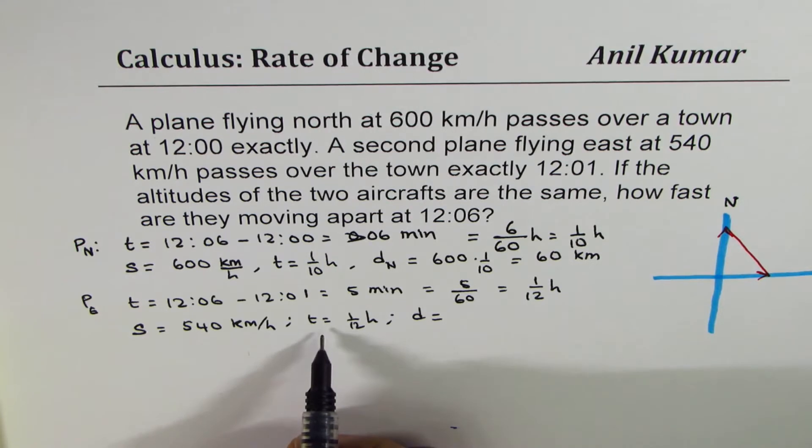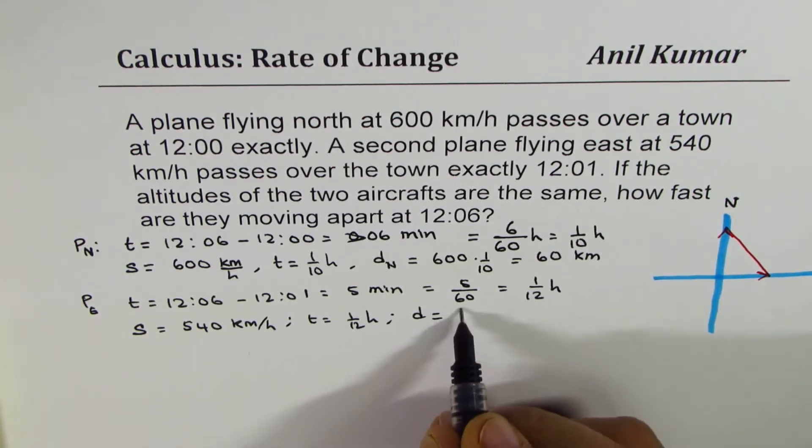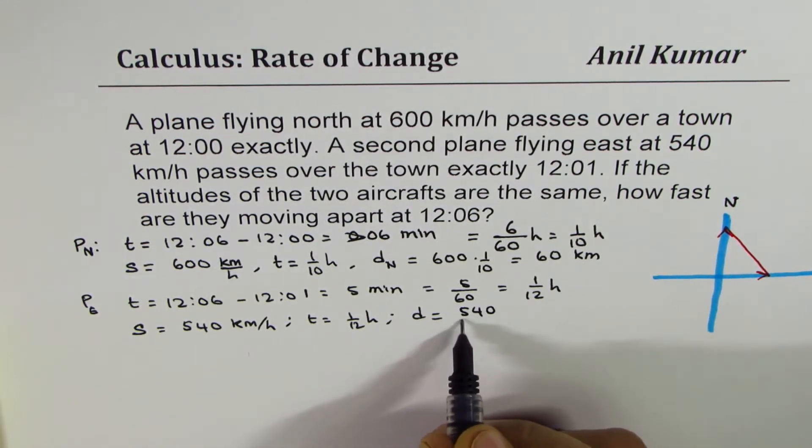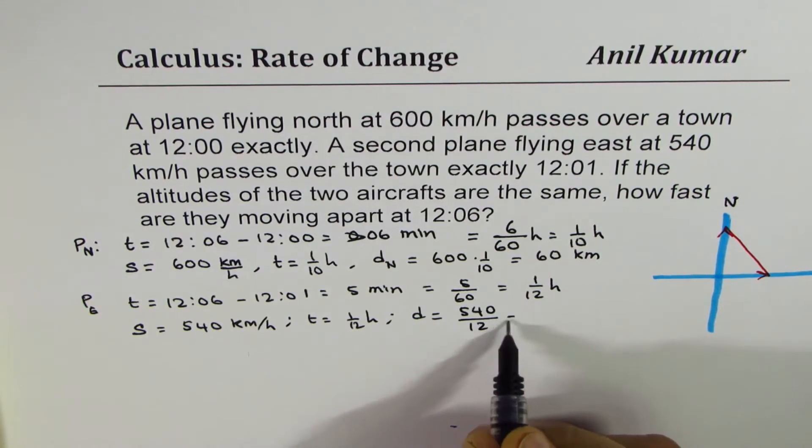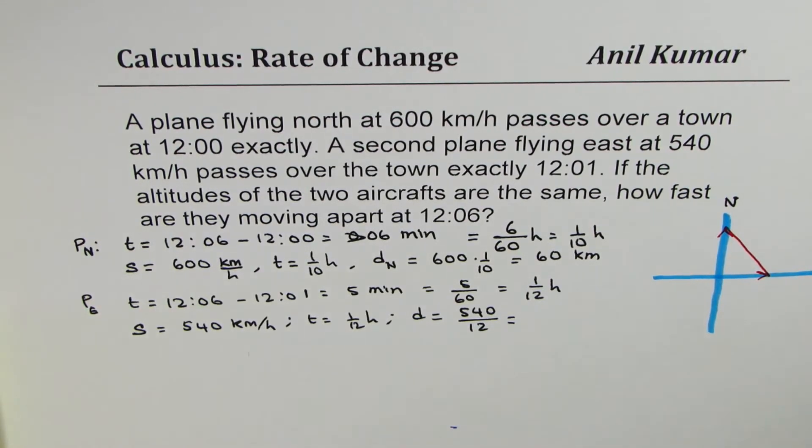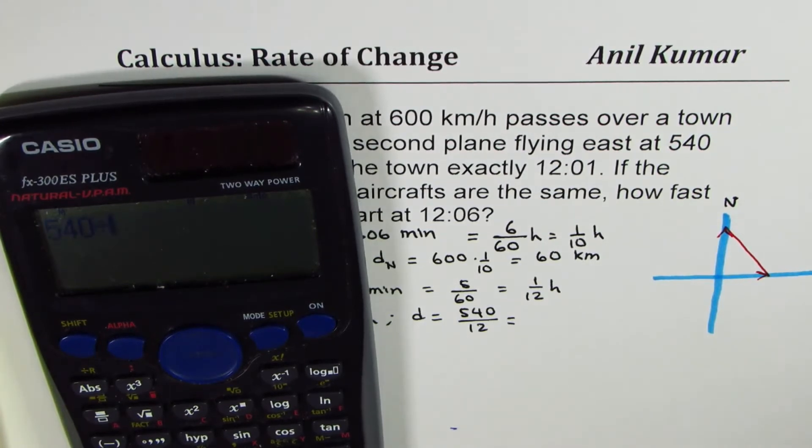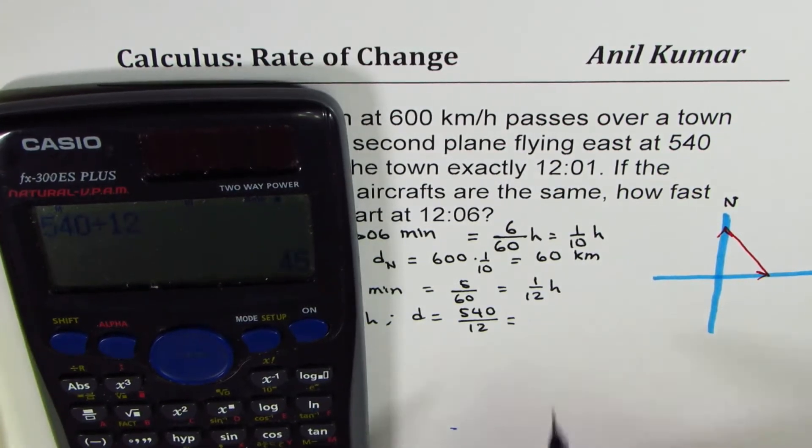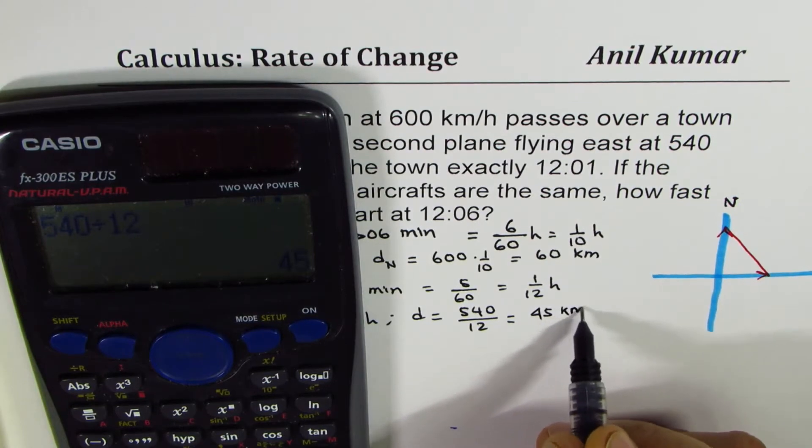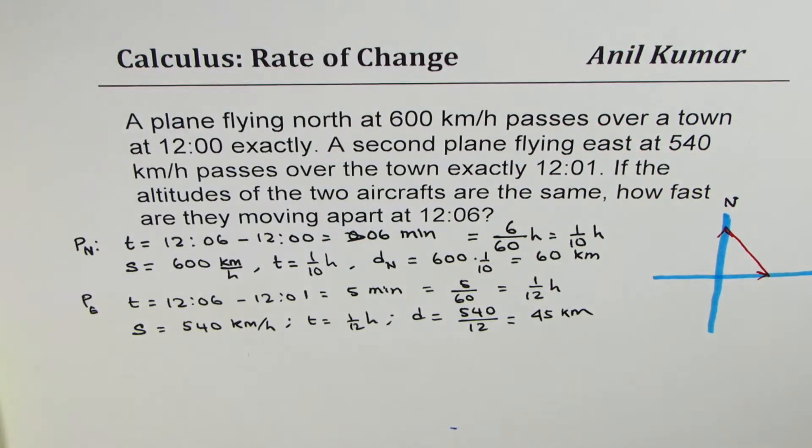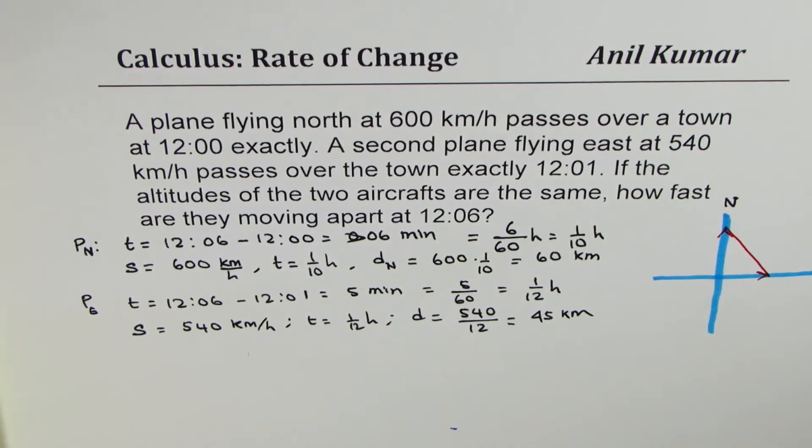What distance will that plane cover? Speed is 540 kilometers per hour and time is 1 over 12 hours. Distance will be speed into time, just multiply these two. That is 540 divided by 12. Let's take a calculator to do the calculations. 540 divided by 12 gives you 45, so 45 kilometers. So you have to work with these initial values and then you have to build up an equation and find the solution.